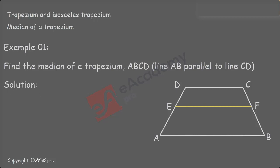Solution. Since ABCD is a trapezium, where line AB is parallel to CD, then the median of the trapezium EF can be found using the formula median EF equals to half multiplied by line DC plus line AB.